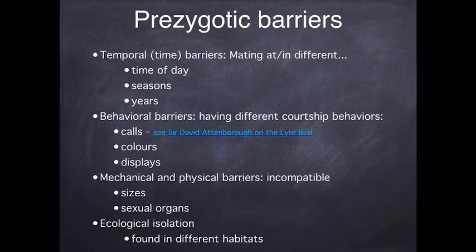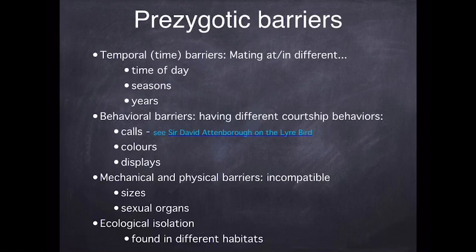Other courtship behaviors involve colour — males are generally more brightly coloured to attract females, who tend to choose the most fantastical individual. Some fish produce amazing patterns on the ocean or lake floor to entice females. Think of peacocks spreading their tails into that shimmering display. There are all kinds of courtship behaviors worth looking up. If you have the wrong courtship behavior, you simply won't be able to attract a mate.